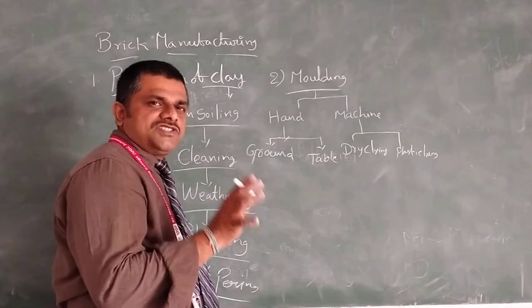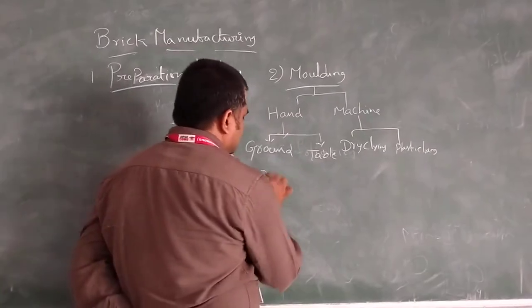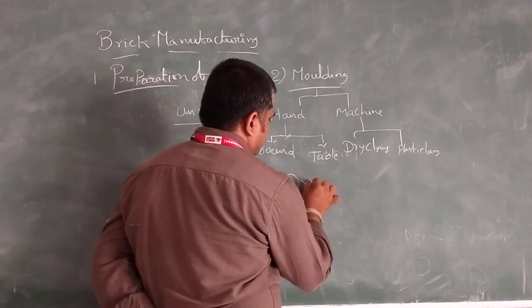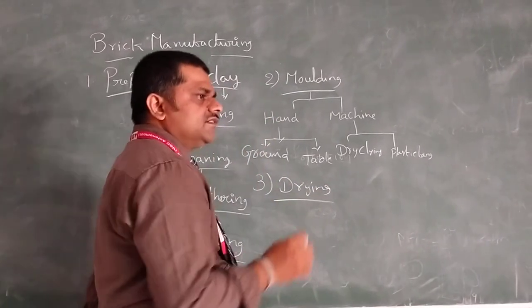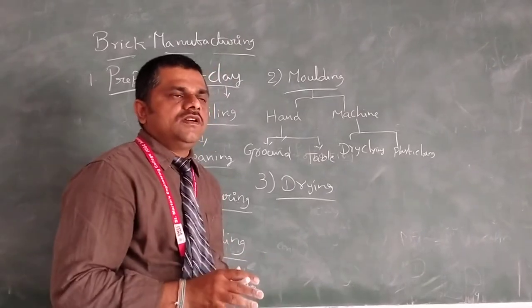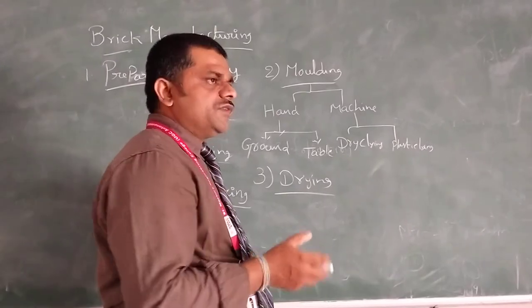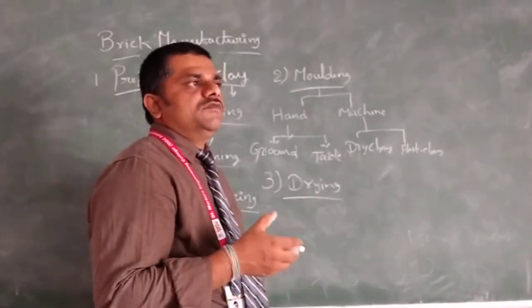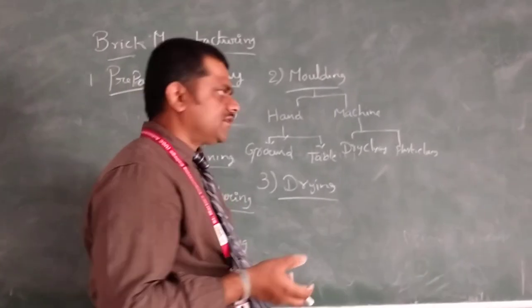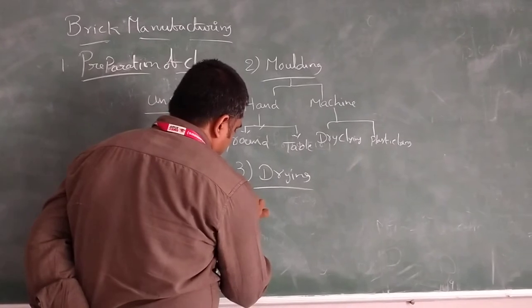This is the molding process to create the shape. And third one is drying. In this drying, we have to give some strength to the brick. So we have to put them in open areas and give some hot air, then it gets dry.